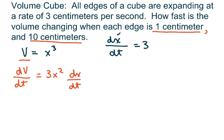Basically all I'm going to do is just plug in x, and I already have my 3 here. So when x is 1, we get the derivative of the volume with respect to t equals 3 times 1 squared times 3, and that's going to equal 9 centimeters cubed per second.